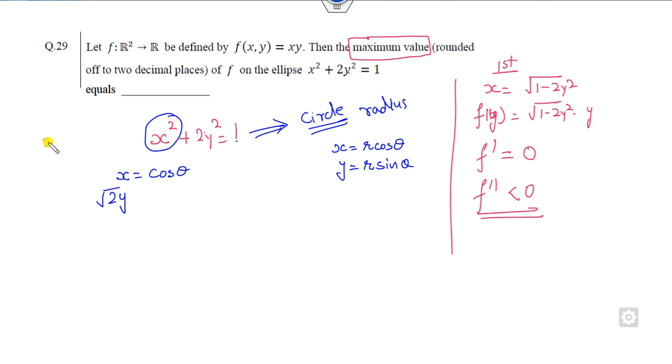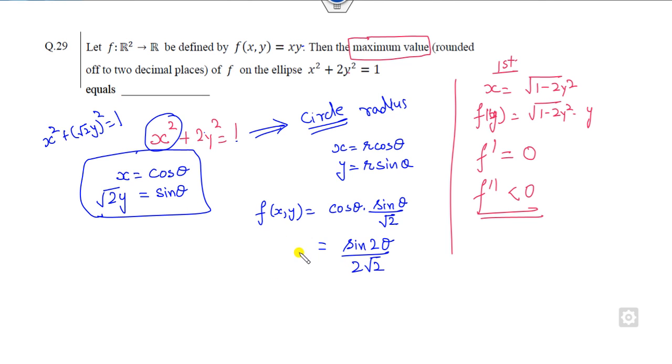So I can substitute this value of x and y in my given function. So what is the value of this? It is cos theta into sin theta divided by root 2. So I can rewrite this number - I can multiply 2 and divide it by 2, which is here.